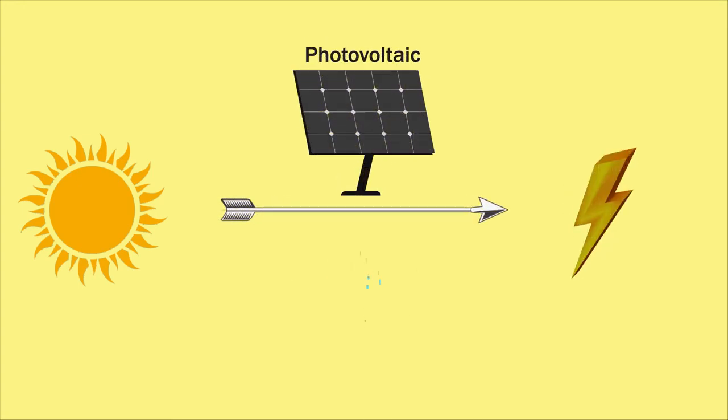PV modules can directly transform sunlight into electricity. There is another type of photovoltaic solar panel that concentrates sunlight and is thus more efficient than conventional photovoltaic panels.